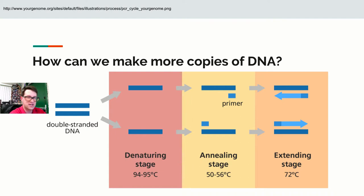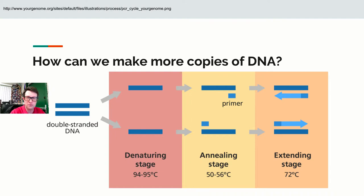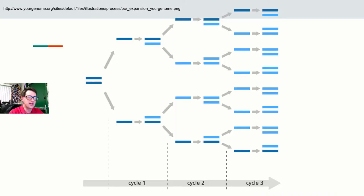Originally PCR had to be done by hand because the high denaturation temperature destroyed the DNA polymerase each cycle. Then an enzyme was found from the organism Thermus aquaticus — a heat-stable DNA polymerase called Taq polymerase. With Taq, the entire PCR process can be completed within an hour. The person who figured this out, Kary Mullis, is now very wealthy, and you must pay licensing fees to use this process.